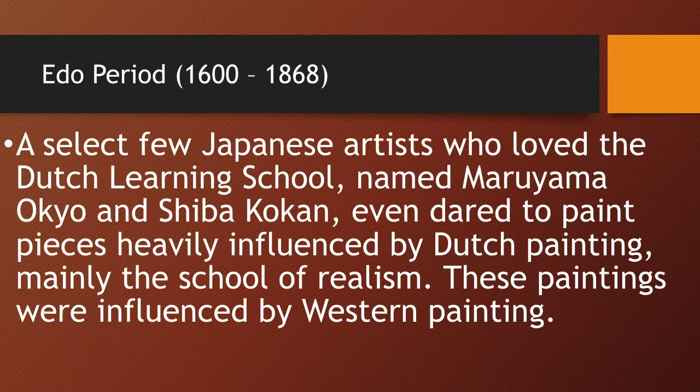At the same time, some Japanese artists were members of the Dutch Learning School. Their names were Maruyama Okkyo and Shiba Kokan. They actually painted pieces influenced by Dutch painting. At this time in the Netherlands, realism was the dominant form of art. So for the first time, you have Japanese artists painting work inspired by the West — namely by the school of realism that was popular in the Netherlands.